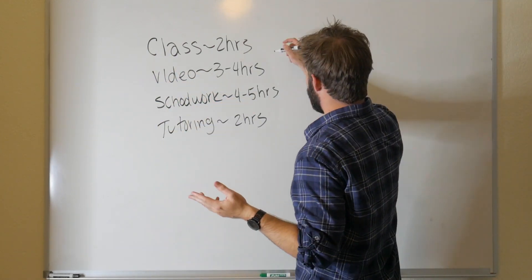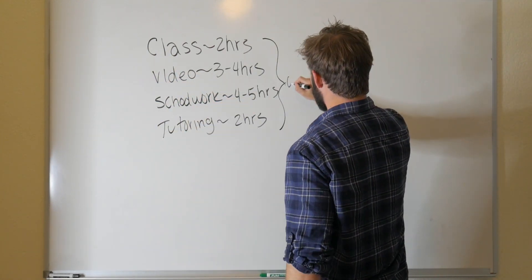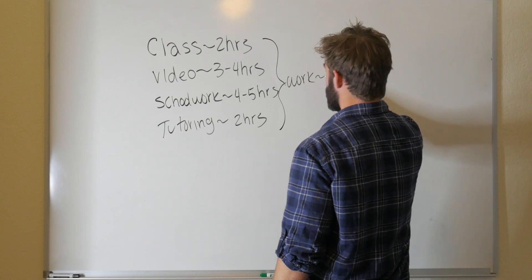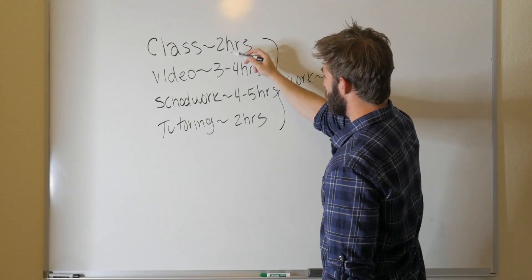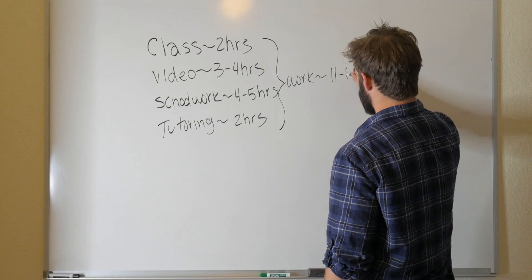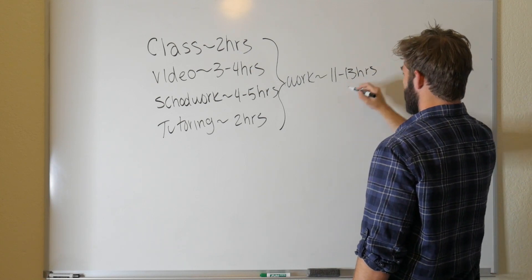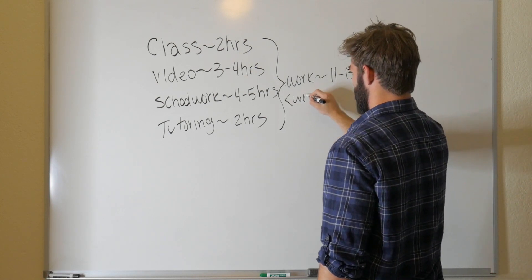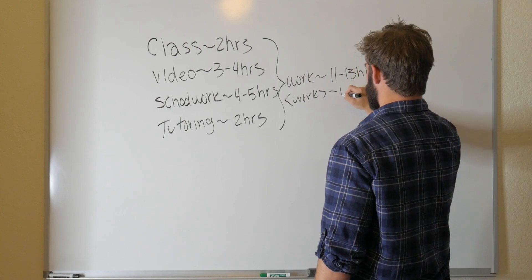So let's go ahead and add all of this stuff up. That tells us that work per day is about—so that's two, three, two, five, nine, eleven—so that's eleven to thirteen hours a day. Let's go ahead and just say that the average work then is around twelve hours.